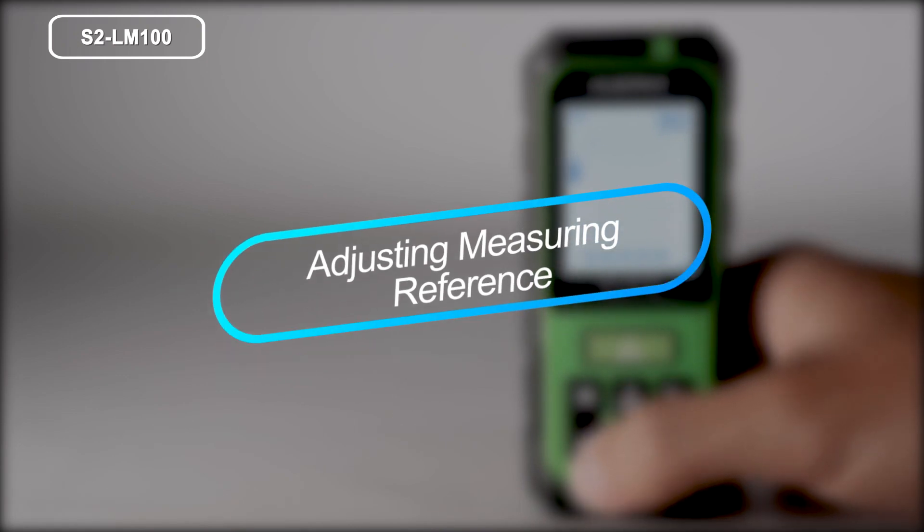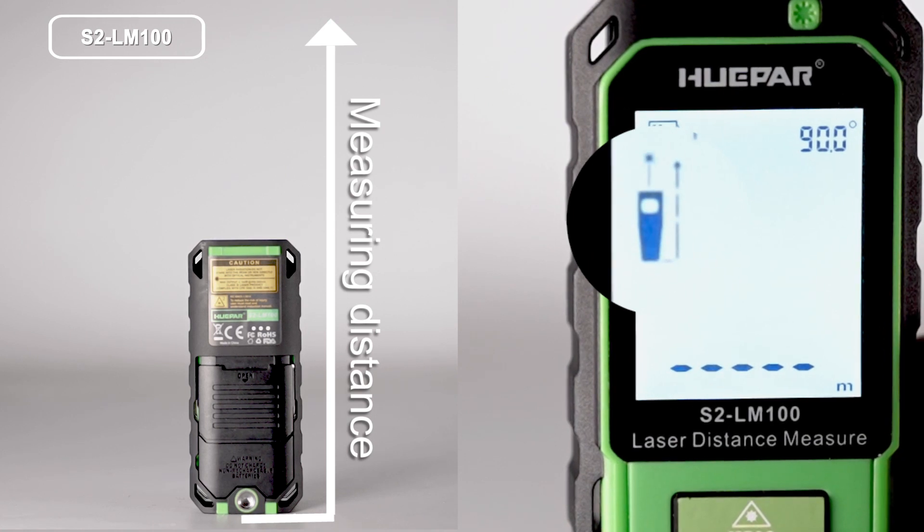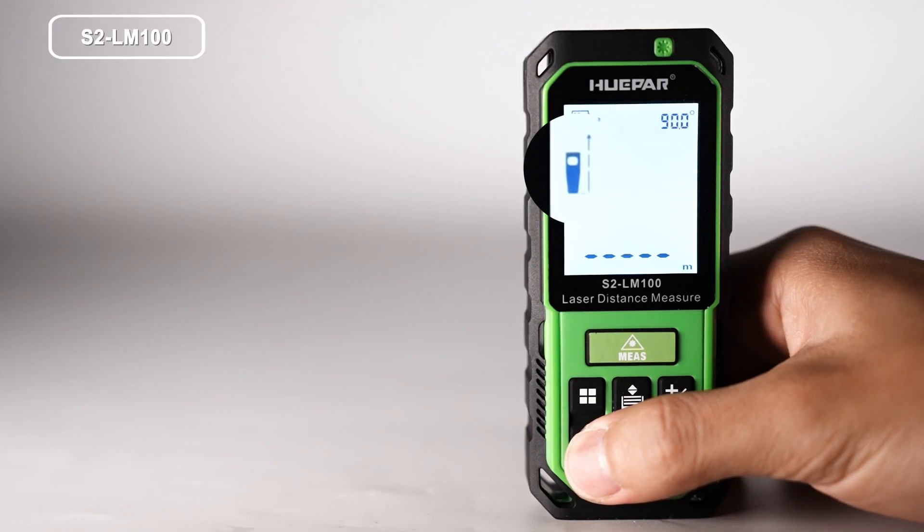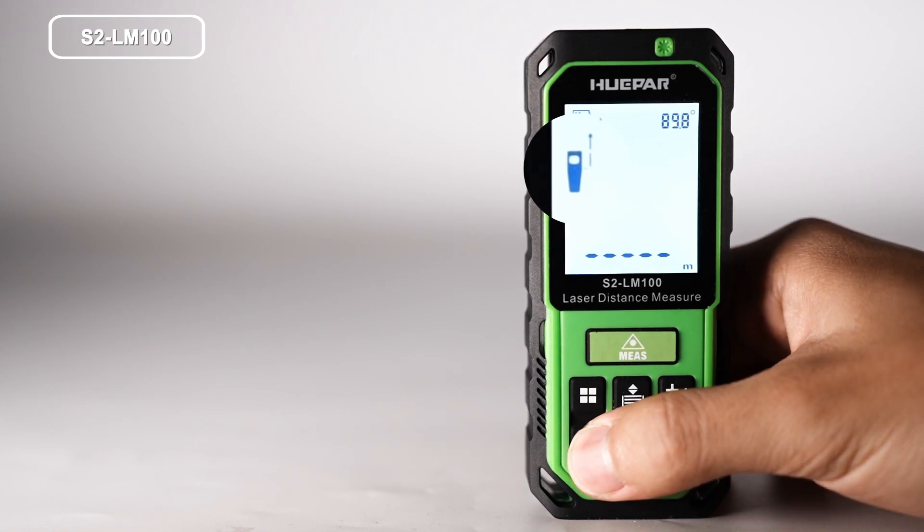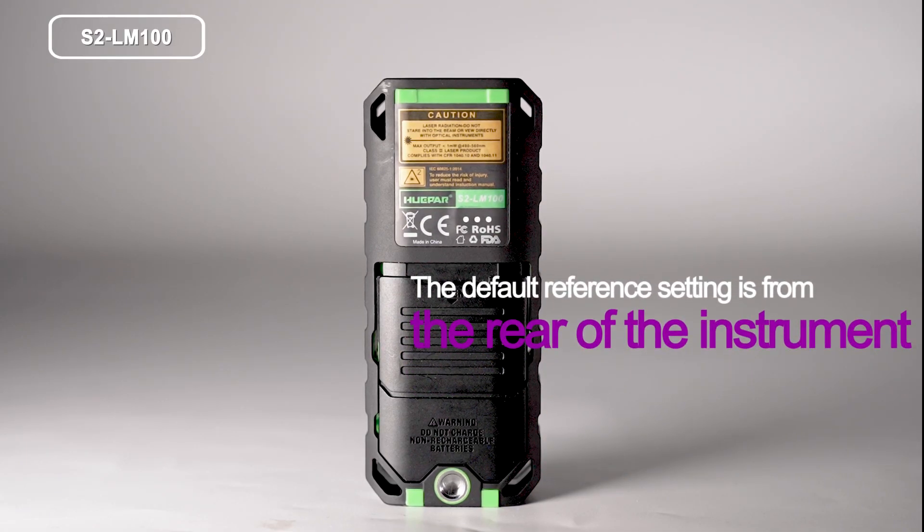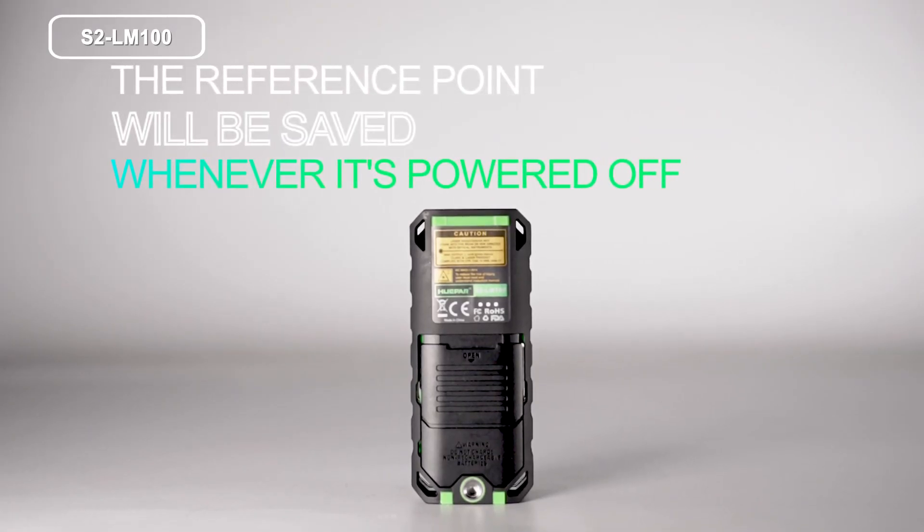Adjusting measuring reference. Press the button to switch reference point among the front, tripod, and the rear of the instrument. There is a beep warning tone when reference point is changed. The default reference setting is from the rear of the instrument. The reference point will be saved whenever it's powered off.